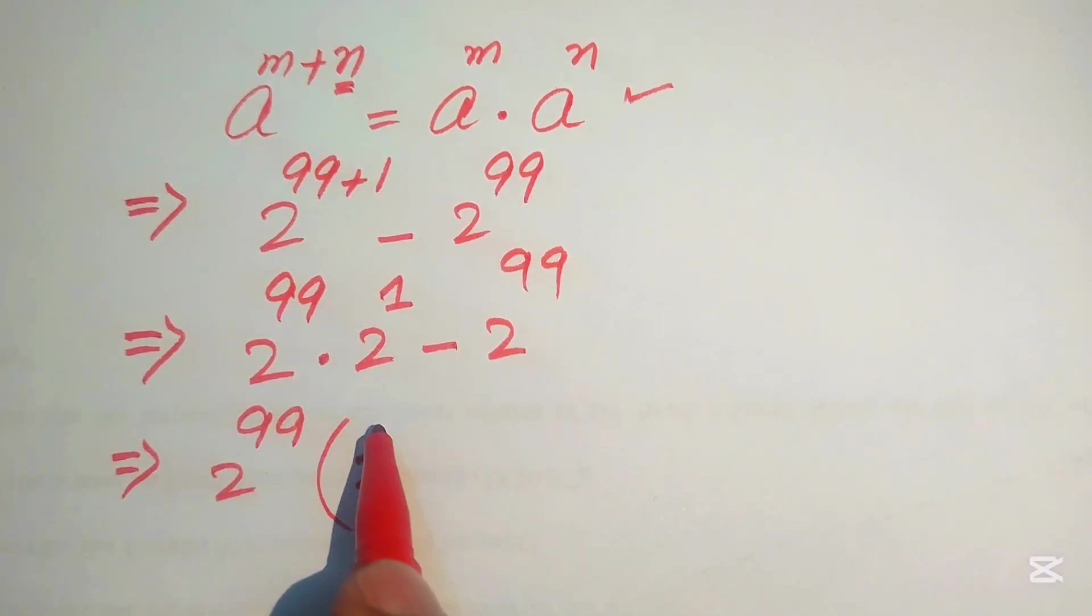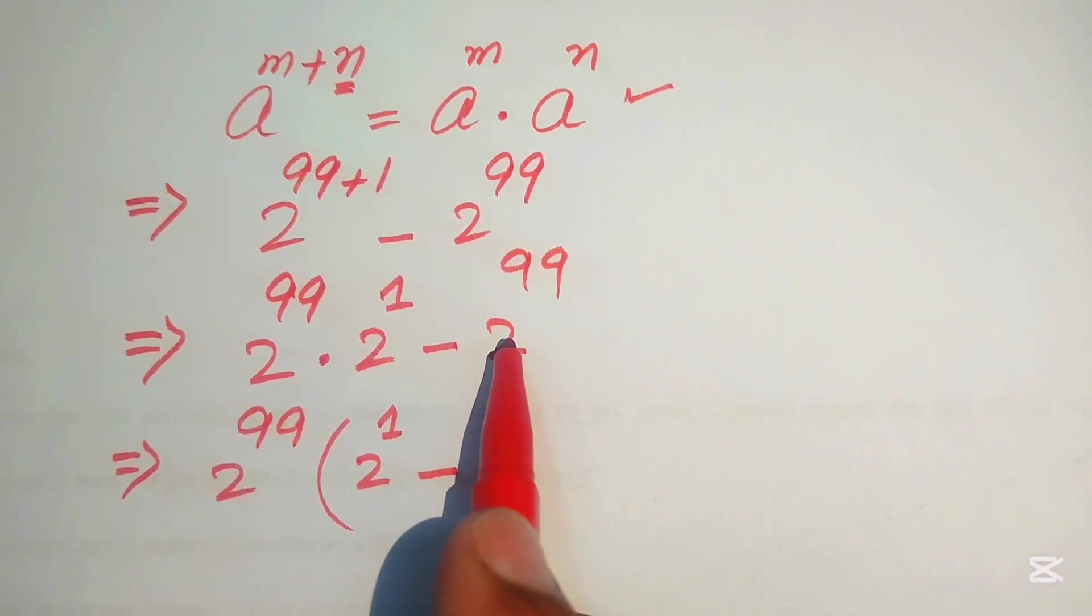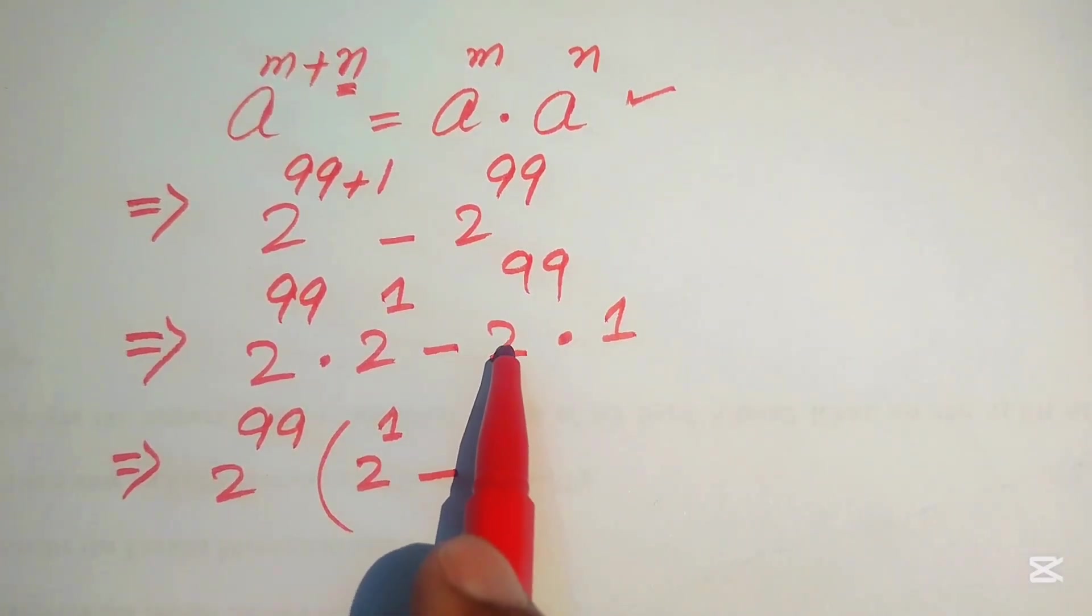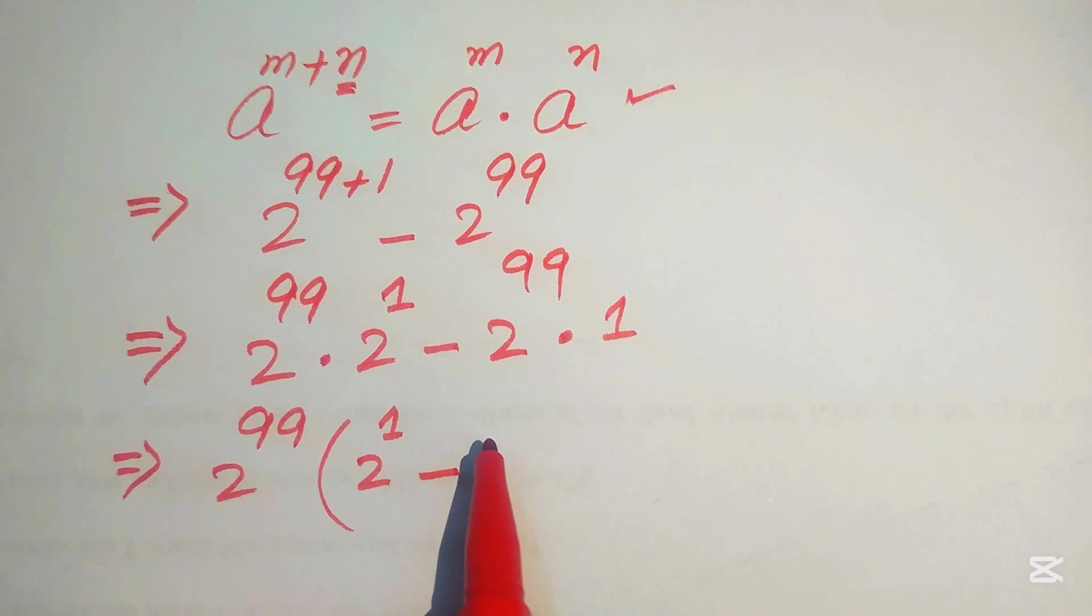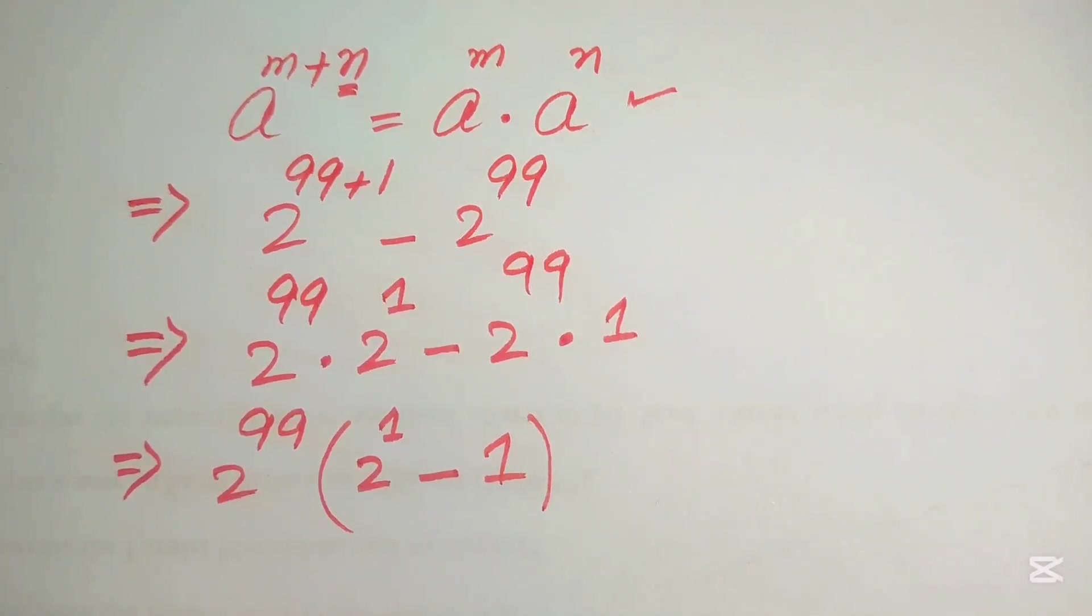When you take common 2 to the power of 99 here, we multiply this expression by 1. So when you take common 2 to the power of 99 from the second part, we get the remaining term is 1 only.